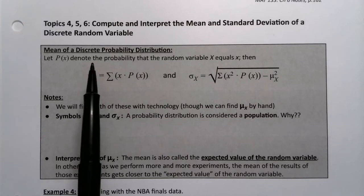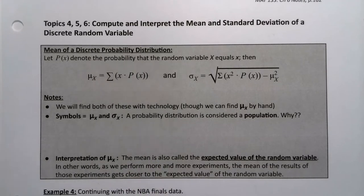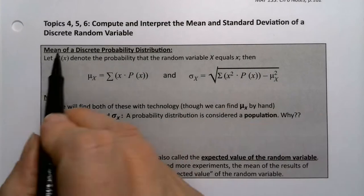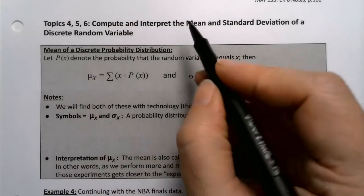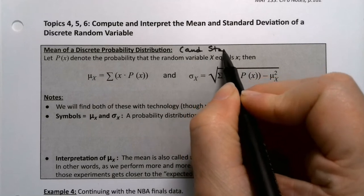Now considering that a discrete random variable is quantitative and we've learned that we can make a probability distribution into a table, it's not altogether surprising that we can find the mean of a discrete probability distribution, and I should say, the standard deviation as well.